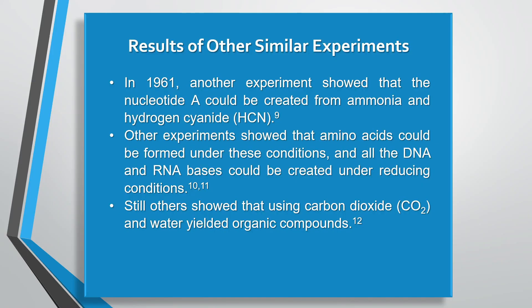Please get this: evolution says that DNA nucleotides, RNA nucleotides, and amino acids did something that they do not do. Although there are numerous problems with the Miller-Urey experiment, it didn't deter others from doing similar experiments. In 1961, another experiment showed that nucleotide A could be created from ammonia and hydrogen cyanide. Nucleotide A is one of the four building blocks of DNA. Other experiments showed amino acids could be formed, and all the DNA and RNA bases could be created under reducing conditions.